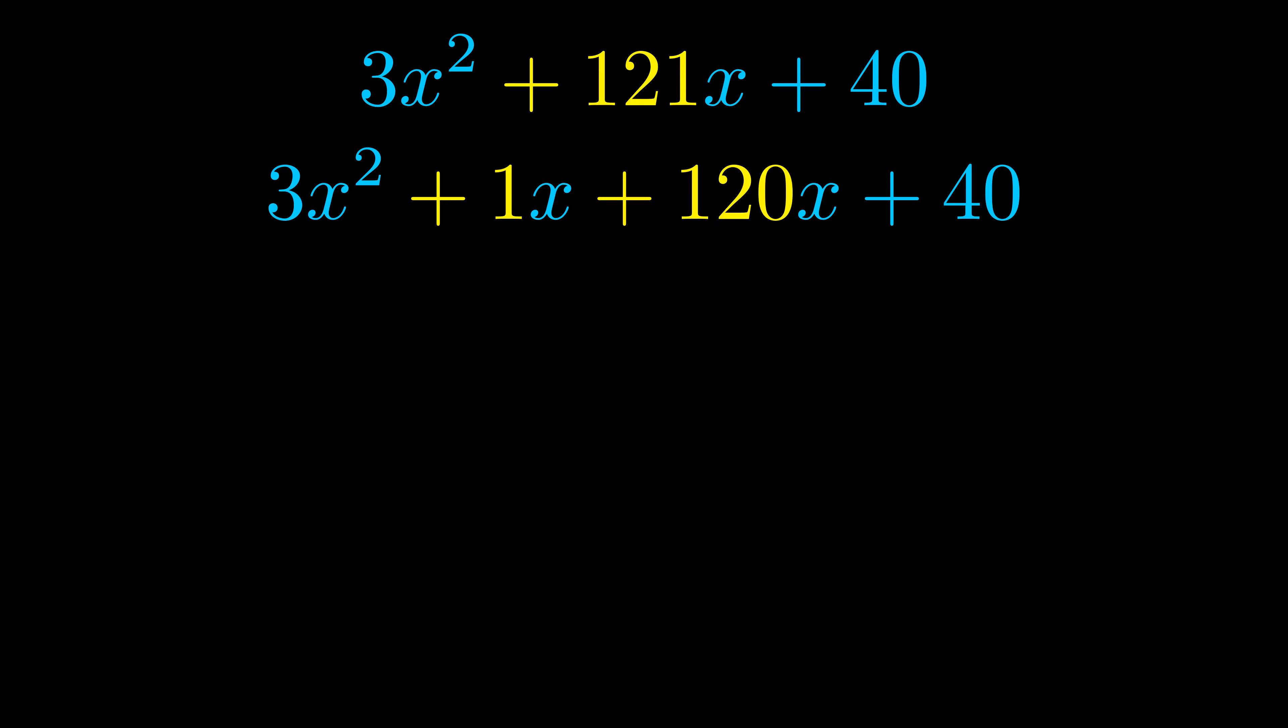Once we've done this, we go ahead and put parentheses around the first term and the last term. And we do that so that we can take the greatest common factor out of both terms.